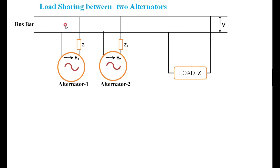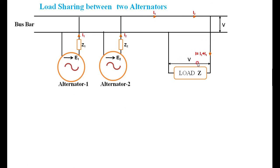The terminal voltage V is equal to E1 minus I1·Z1. Similarly, V is equal to E2 minus I2·Z2. The current delivered by alternator 1 is I1 and by alternator 2 is I2. Therefore the total current in the load is I1 plus I2, flowing through the load. The voltage across the load terminals is also V. So E1 equals V plus I1·Z1 and E2 equals V plus I2·Z2.